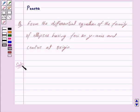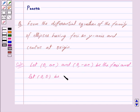and center at the origin. So let (0, ae) and (0, -ae) be the foci and let (0, 0) be the center.